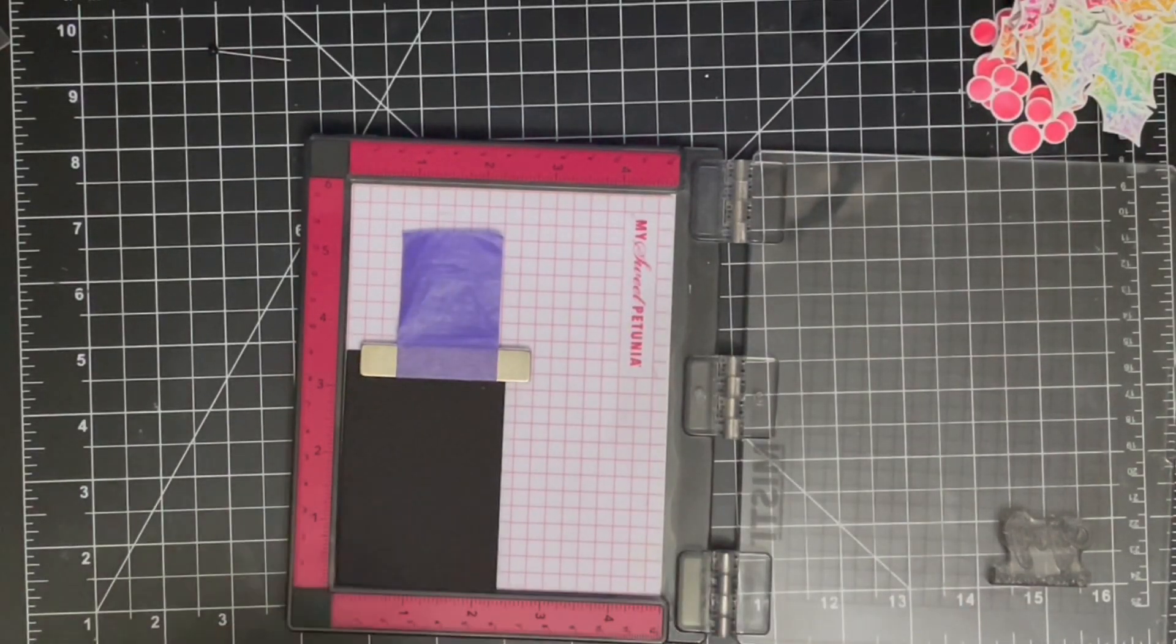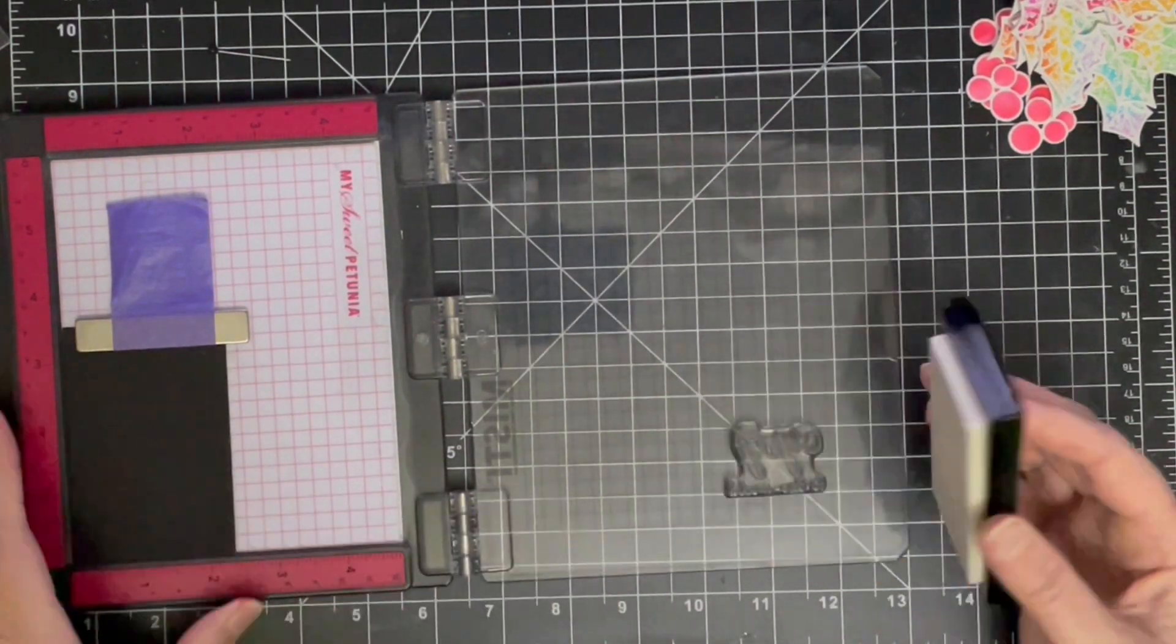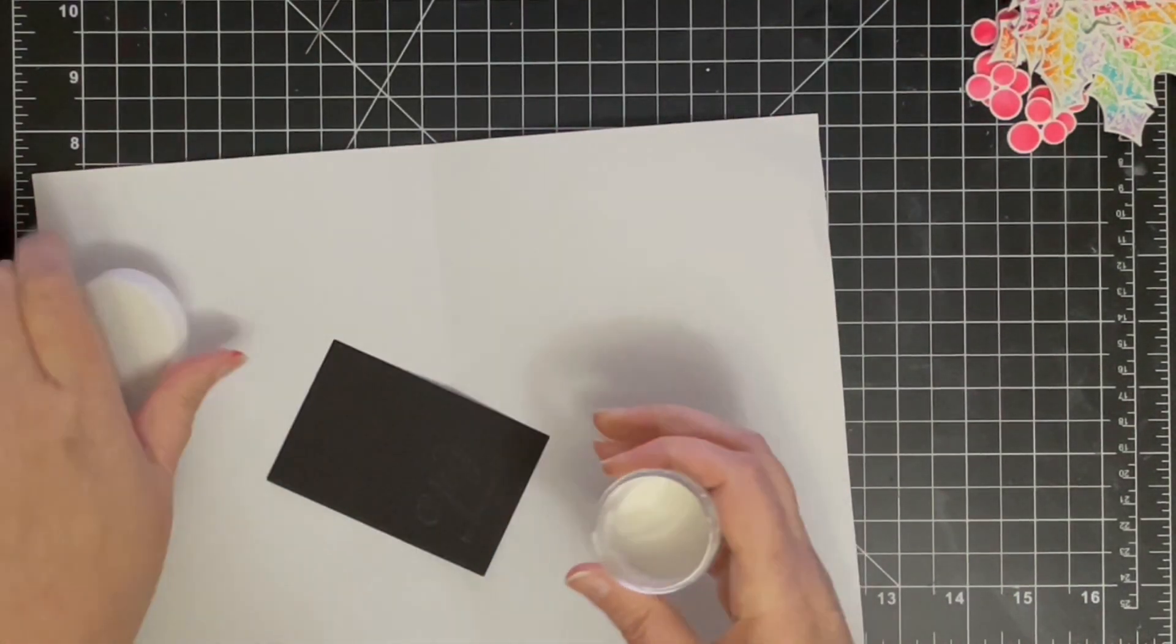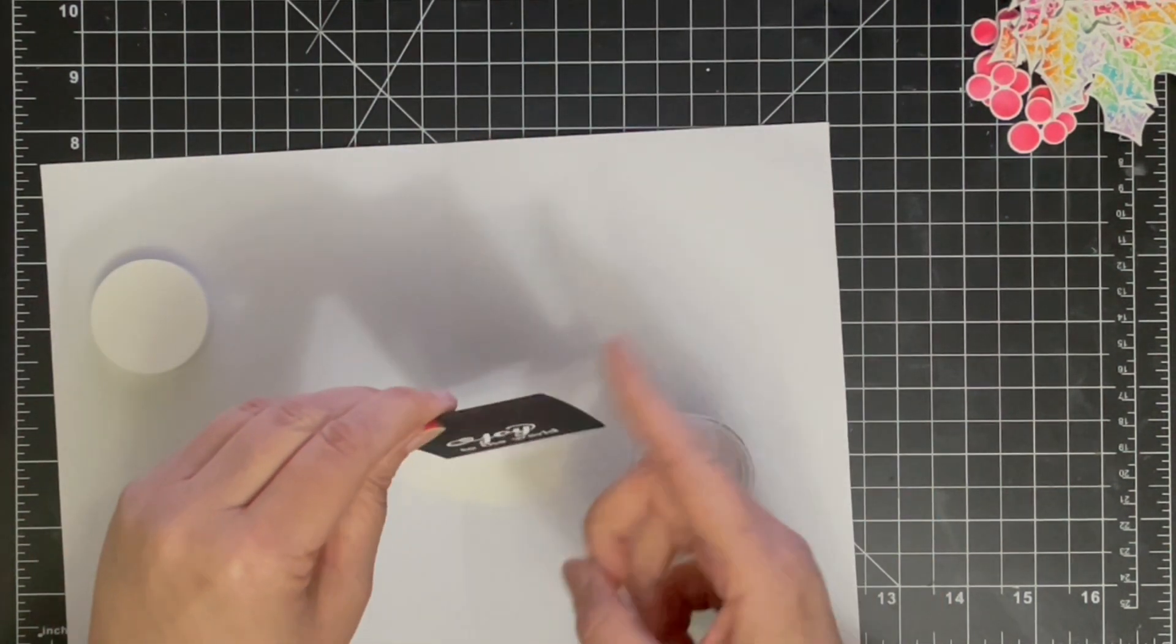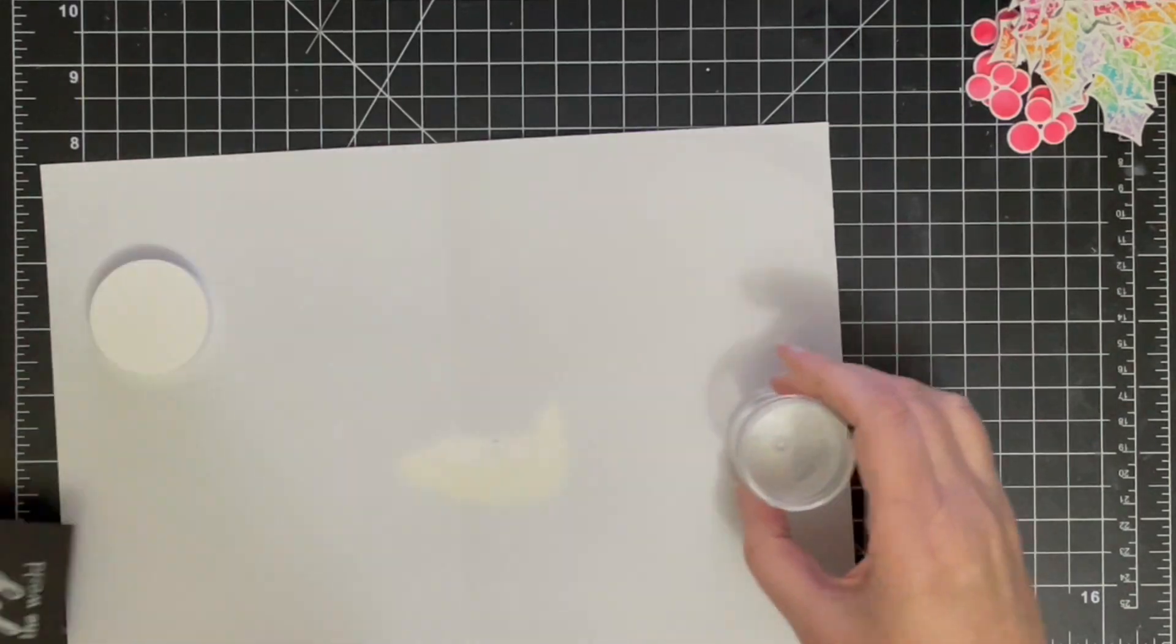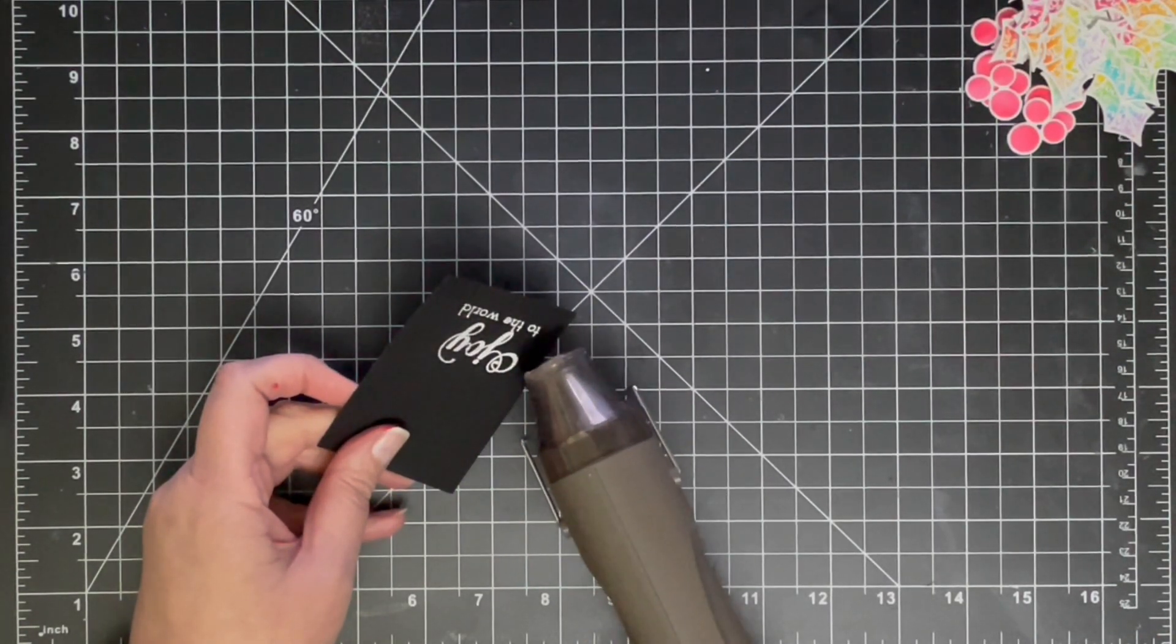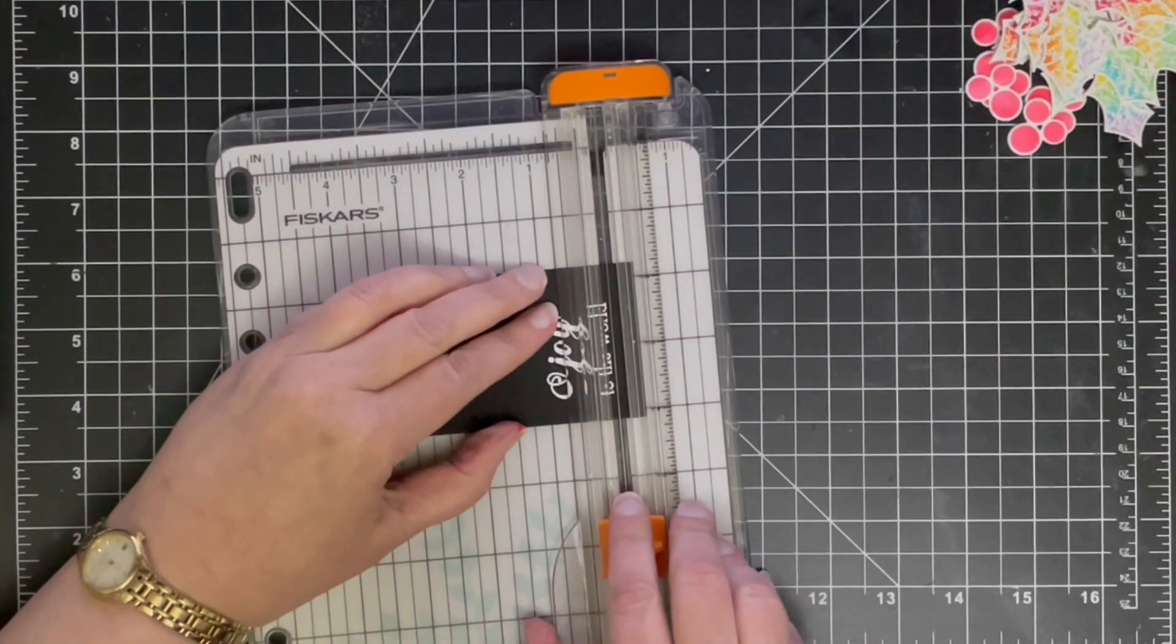All right, so I'm just going to make my sentiment now before I lay everything out on my card. I'm using this sentiment stamp from Warm Blessings by Altenew, which I've used a lot this year. It's just got some gorgeous sentiments in this set, and again I am embossing in white embossing powder from Hero Arts onto some Hero Arts black cardstock.